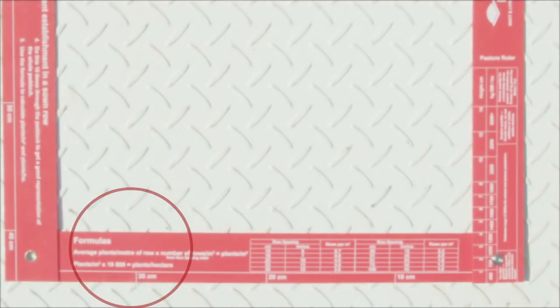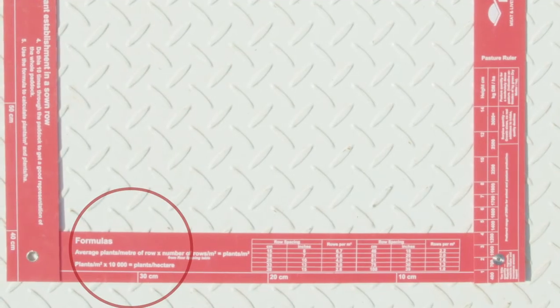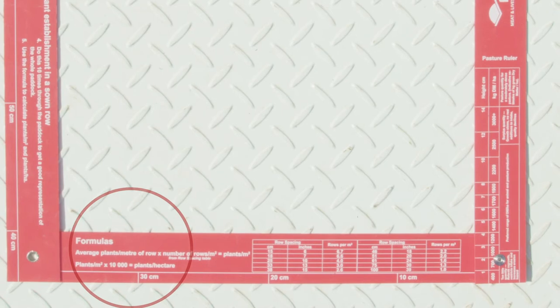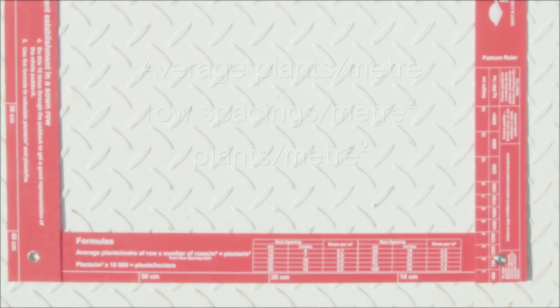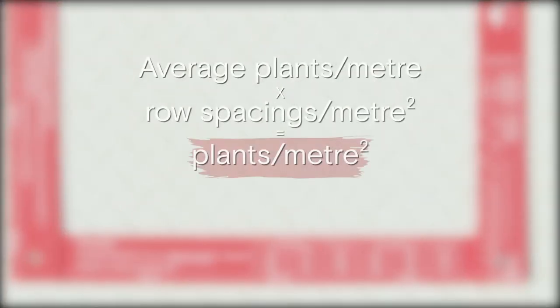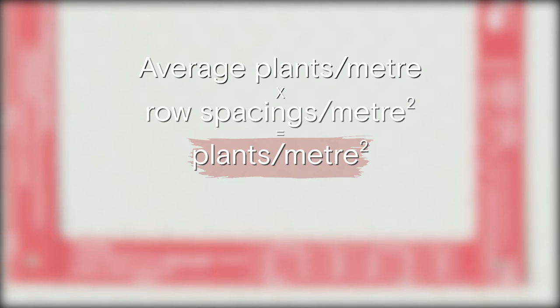This formula can also be found on the LLS Pasture Square for your easy reference. If you need to convert your plants per metre squared figure to a plants per hectare, multiply this figure by 10,000.